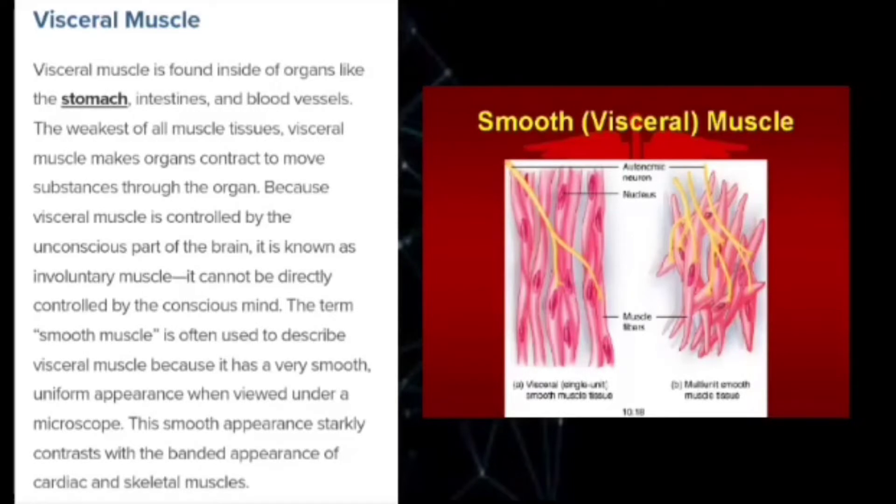The term smooth muscle is often used to describe visceral muscle because it has a very smooth, uniform appearance when viewed under a microscope.